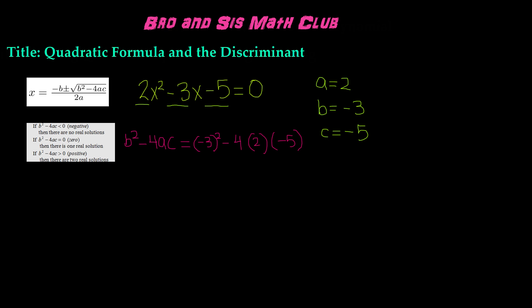Now let's simplify the right-hand side to determine the discriminant. Negative 3 squared gives you positive 9. Negative 4 times positive 2 gives you negative 8, and then we have times negative 5. So we have 9, and then negative 8 times negative 5 gives you positive 40. And 9 plus 40 gives you 49.